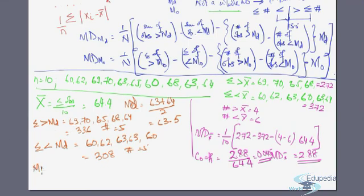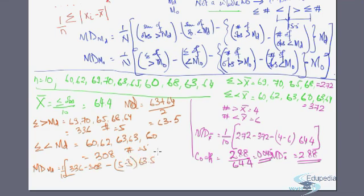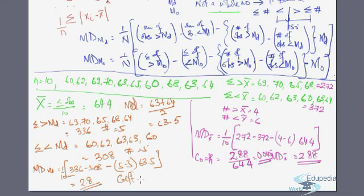Now let's put this in the formula. Mean deviation from median = (1/10) × [336 − 308 − (5 − 5) × 63.5]. Since (5 − 5) = 0, it simplifies to (336 − 308) / 10 = 28 / 10 = 2.8. The coefficient of mean deviation from median = 2.8 / 63.5 = 0.041.